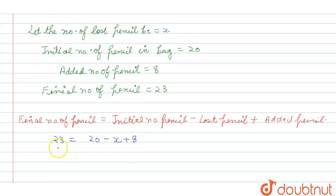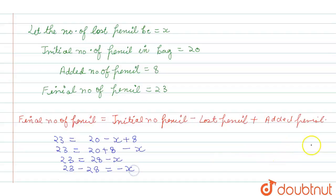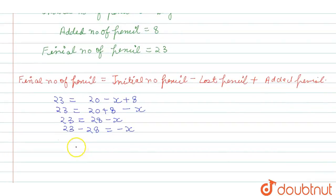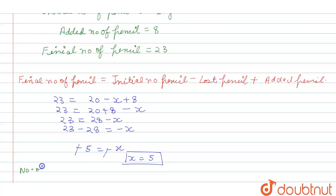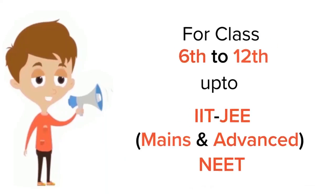So we write: 23 = 20 + 8 - x. So 23 = 28 - x. Therefore, x = 28 - 23 = 5. So x is equal to 5, meaning the number of lost pencils is 5.